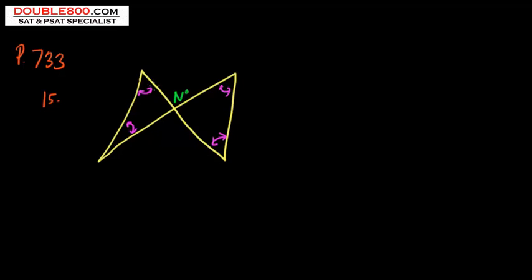We're given a shape that sort of looks like a bow tie and we're told that this angle here is n, and we want to find the degree measures of all of these little arrowed angles.